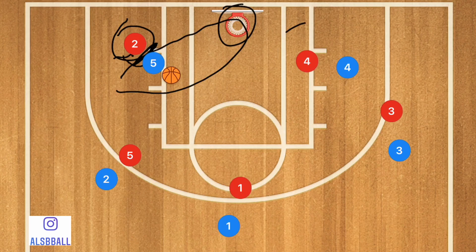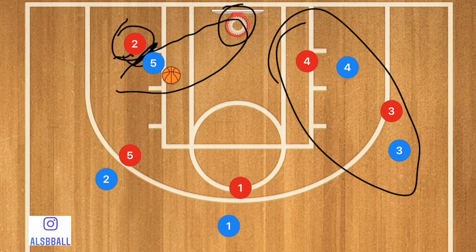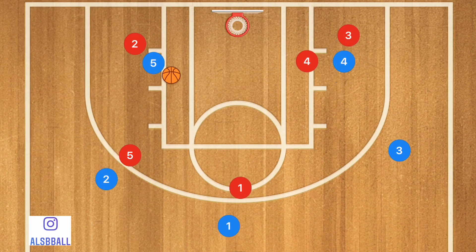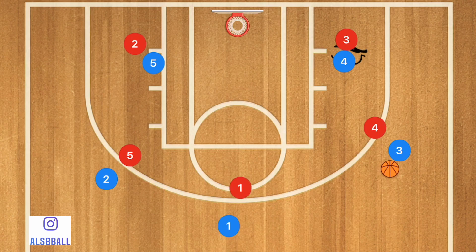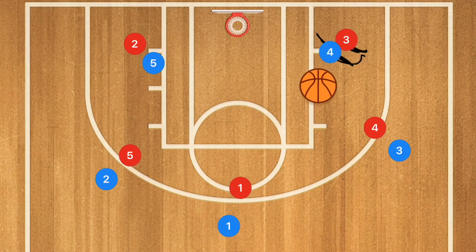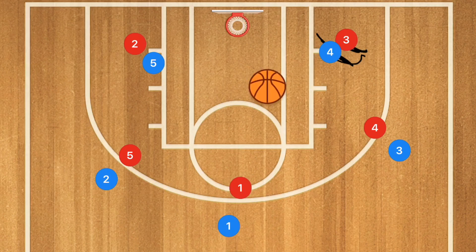If this happened on the other side, the same idea applies — player three gets the ball and player four, after that screen, rolls towards the basket and gets inside position on player three. Player three passes down to player four for an easy basket.